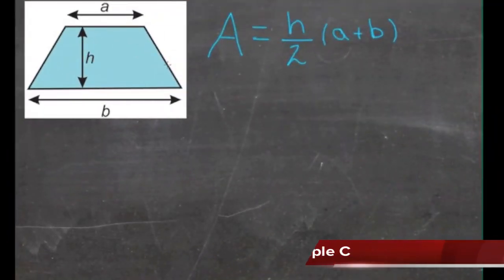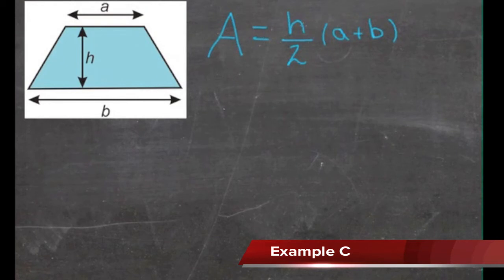In this lesson, we practice using algebra to evaluate equations given specific values for the variables. The equation we're looking at is the one to find the area of a trapezoid: Area equals h over 2 times the quantity a plus b.